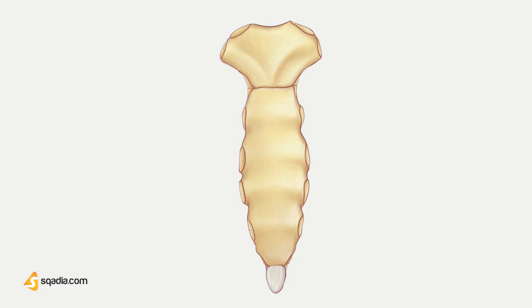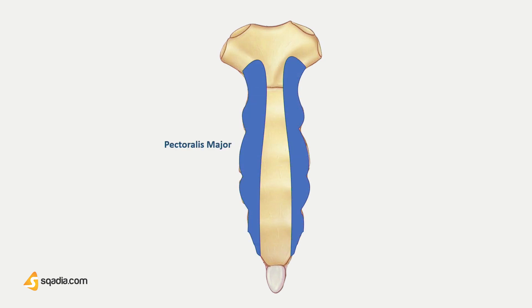Several muscles have attachments to the sternum. The anterior surface gives origin to pectoralis major on the lateral sides,